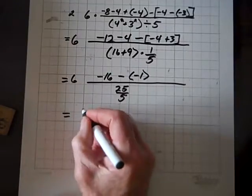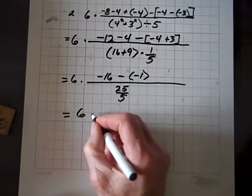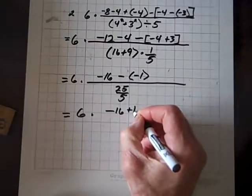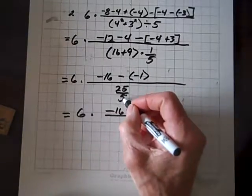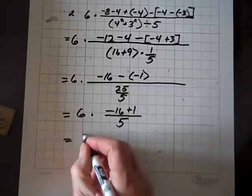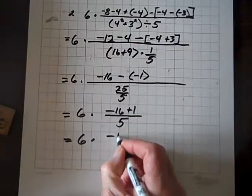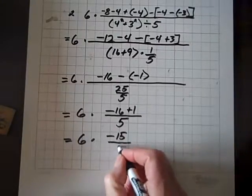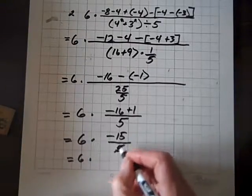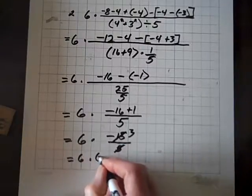So this equals six, and we have negative sixteen — minus times a minus is a plus — plus one, over five goes into twenty-five five times. So we have six times, and now we have negative sixteen plus one, which is negative fifteen, divided by five. Five goes into fifteen three times, and that's a negative three.